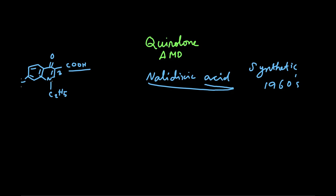The numbering is as follows: Nitrogen gets the number 1, then 2, 3, 4, 5, 6, 7, and 8. There is no numbering for the two shared carbons at the ring junction. And this is the structure of Nalidixic Acid.